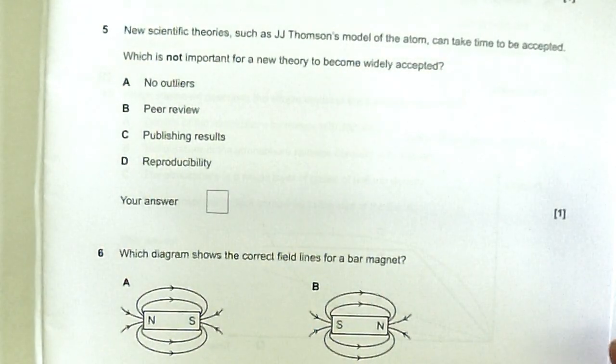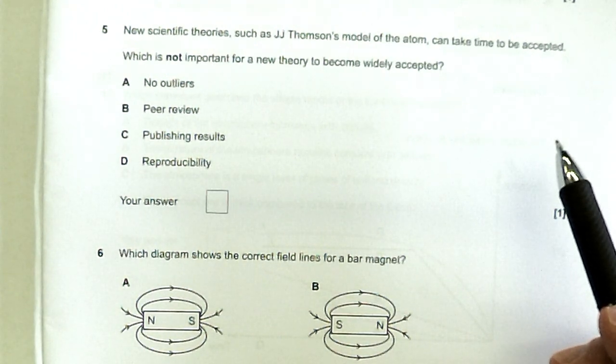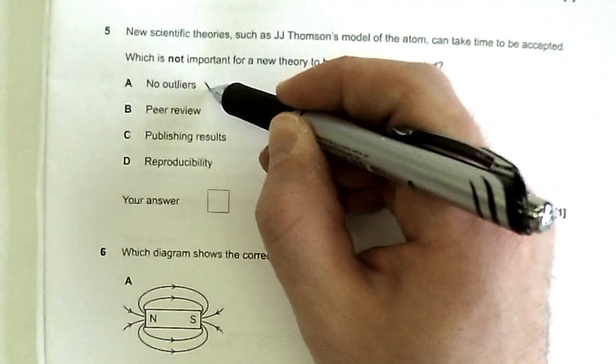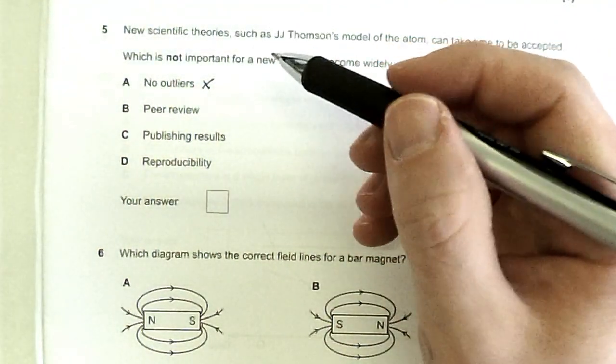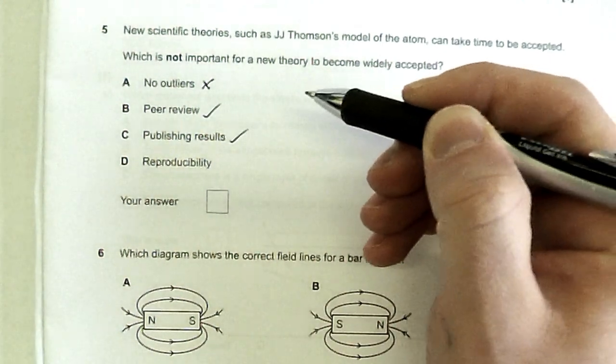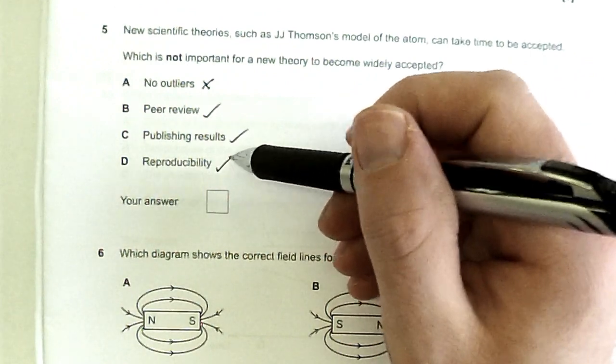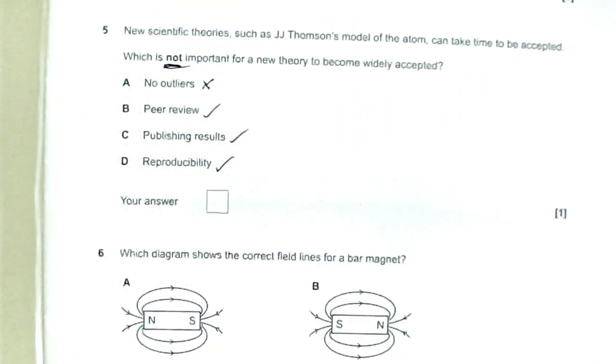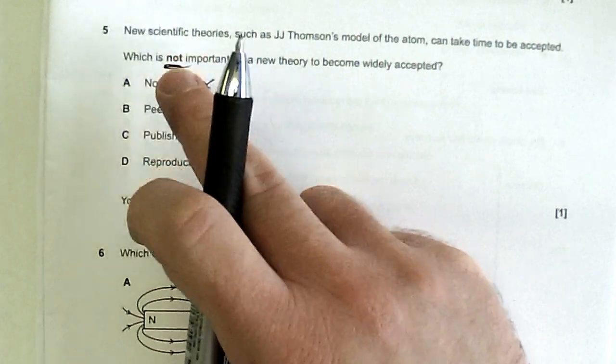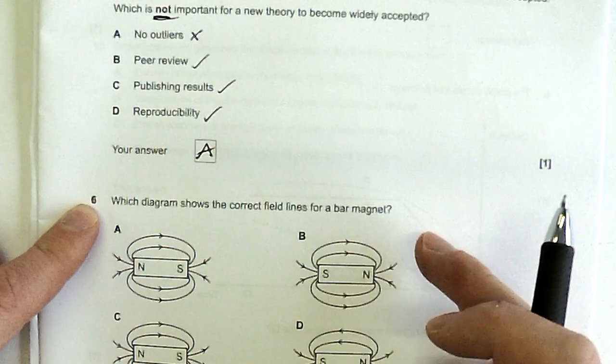New scientific theories, such as J.J. Thomson's model of the atom, can take time to be accepted. Which is not an important thing for a new theory to become widely accepted? No outliers. Well, not really, because actually most experiments will have outliers at some point. Peer review, that is important. Publishing results, that's pretty important for changing theories. Reproducibility. So if somebody can do a different experiment and get the same findings, that is important. Now the question asks, which is not important for a new theory to be accepted, so the answer is A. This is an important one for actually checking back and reading your question. What exactly are they expecting you to answer?